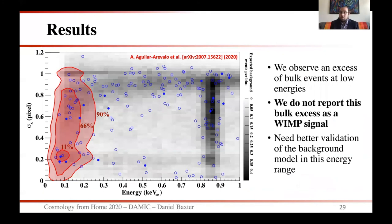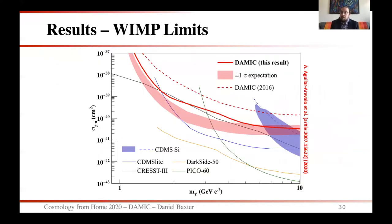Comparing the background model against data, we find excellent agreement above 1 keV. However, at low energies near threshold, we observe an excess of bulk events. We choose not to report this bulk excess as a WIMP signal, mainly because we need better validation of the background model in this energy range. Even in the presence of this excess, we are able to set excellent limits on dark matter. Our detector has reached its projected sensitivity at the high mass range, allowing us to exclude for the first time with silicon a substantial fraction of the CDMS2 silicon allowed region, while at lower masses we are limited by this bulk excess.